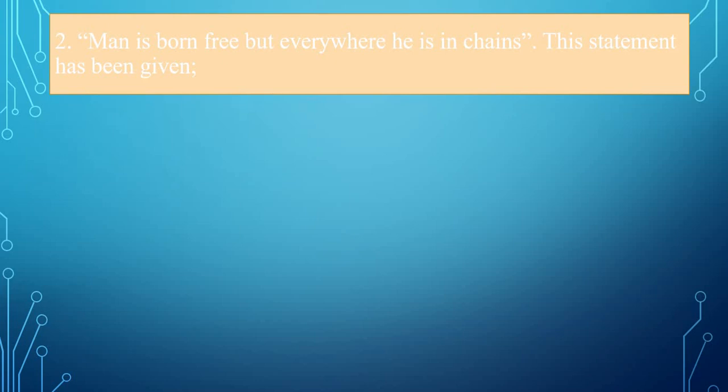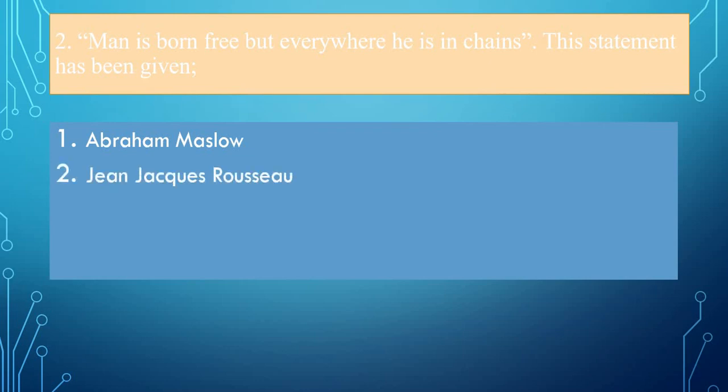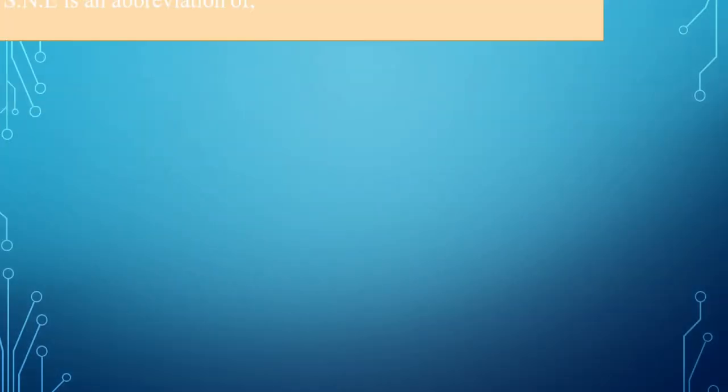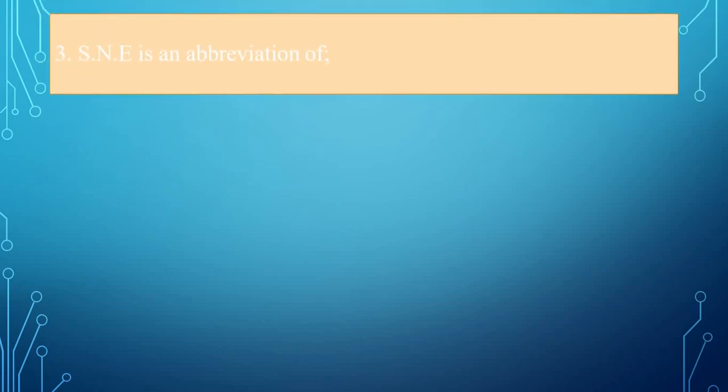The second question: Man is born free but wherever he is in chains. This statement has been given by Abraham Maslow, Jean-Jacques Rousseau, John Dewey, or W.H. Kilpatrick? The correct answer is Jean-Jacques Rousseau.